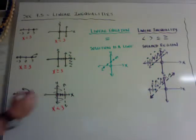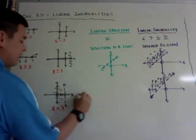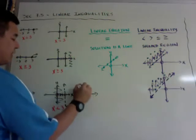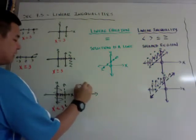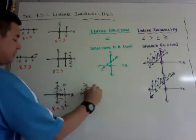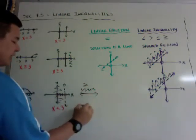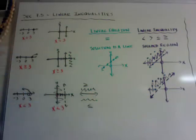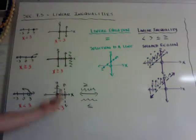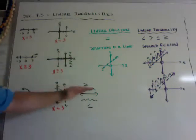The other thing to remember: if I have a line going this way, greater than or equal to means you shade above, and less than or equal to means you shade below the line. So greater is above or to the right, less than is to the left or below.